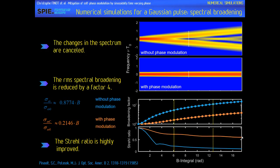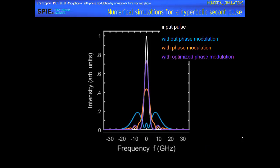All these results are derived from a Gaussian pulse. But we can also wonder if it may work with other pulse shapes, such as a hyperbolic secant pulse. We have done the same thing, and what we can see is that with the external phase modulation, we retrieve the same spectral shape. But the power at the central frequency is quite heavily affected — it is less than the input power at the central frequency. So it works, but not as well as the previous case for a Gaussian pulse.